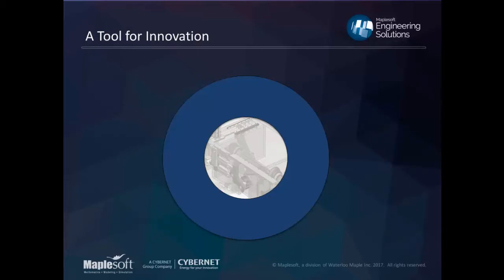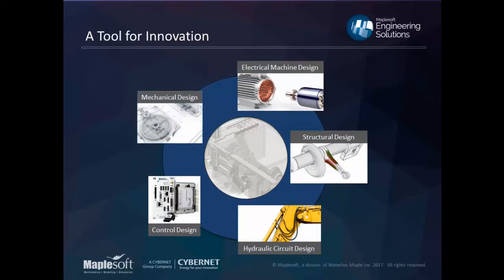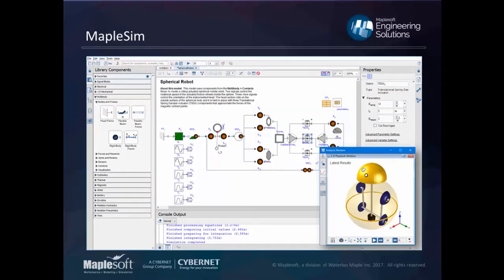Typically an engineer will use some combination of FEA, spreadsheets, and their own intuition, and might not feel they need dynamic simulation software. But there'll be a time when they need to add a new subsystem or mechanism where they can't make those changes confidently. By taking a system-level approach, it's quite quick to create or test an initial concept, notice red flags right away, and answer what-if questions much more straightforwardly than before.